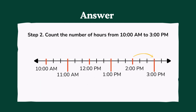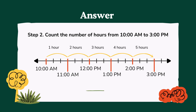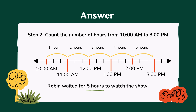Step 2: Count the number of hours from 10 AM to 3 PM. That is 1 hour, 2 hours, 3 hours, 4 hours, 5 hours. Robin waited for 5 hours to watch the show.